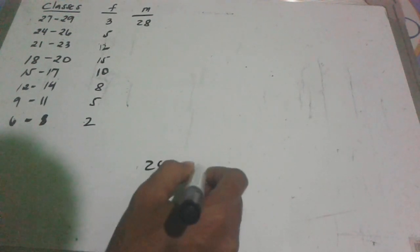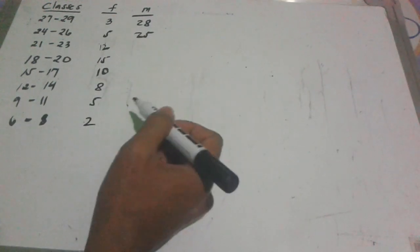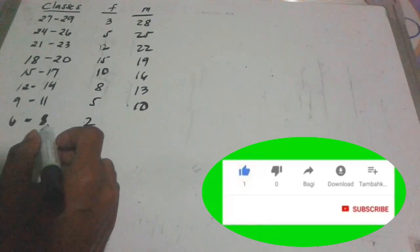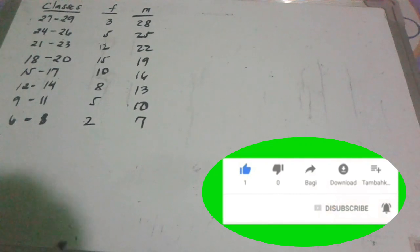Continuing: 21 plus 23 divided by 2 is 22. Then 18 plus 20 divided by 2 is 19. 15 plus 17 divided by 2 is equal to 16. 12 plus 14 divided by 2 is equal to 13. 9 plus 11 divided by 2 is equal to 10. And the last one: 6 plus 8 divided by 2 is equal to 7. So just add the lower limit plus upper limit then divide by 2.